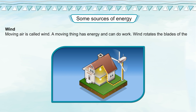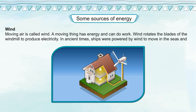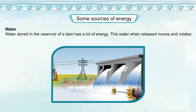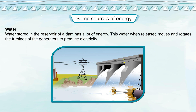Wind: Moving air is called wind. A moving thing has energy and can do work. Wind rotates the blades of the windmill to produce electricity. In ancient times, ships were powered by wind to move in the seas and oceans. Water: Water stored in the reservoir of a dam has a lot of energy. This water, when released, moves and rotates the turbines of the generators to produce electricity.